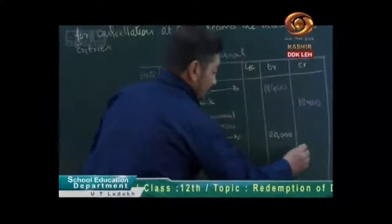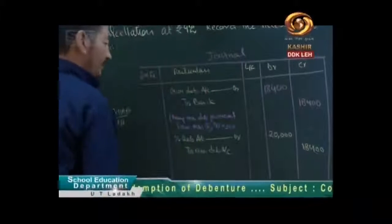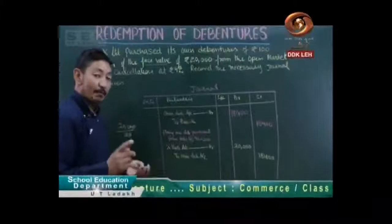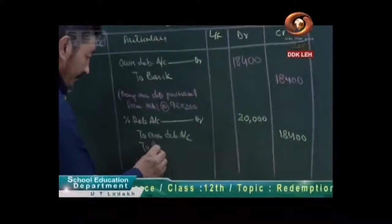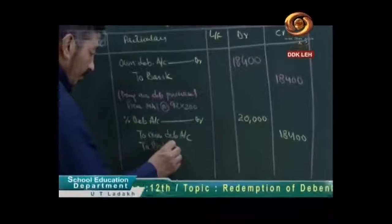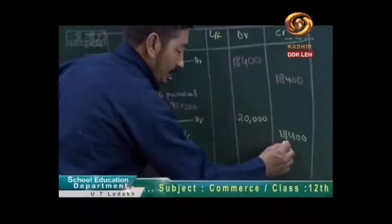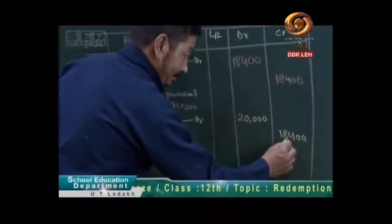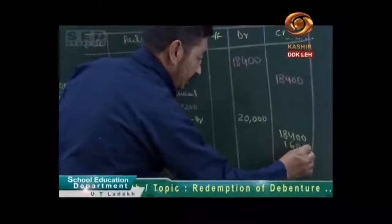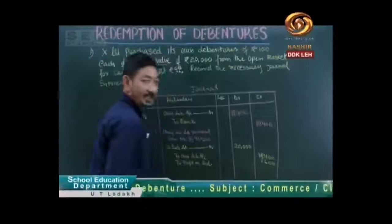We purchased it for 18,400. Now, what is the profit on the company? How much is the profit? We will write here: Profit on Redemption. That is, if we take it from 20,000 to 18,400, then it will come to us: 1,600. So what is the profit on redemption? That is 1,600.